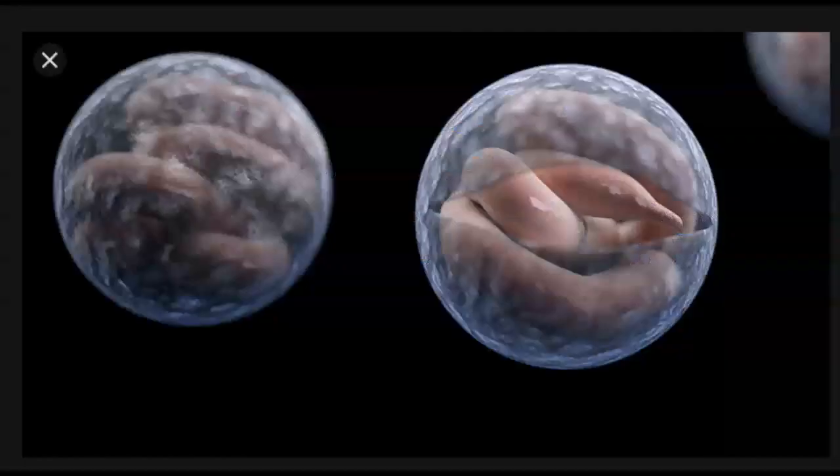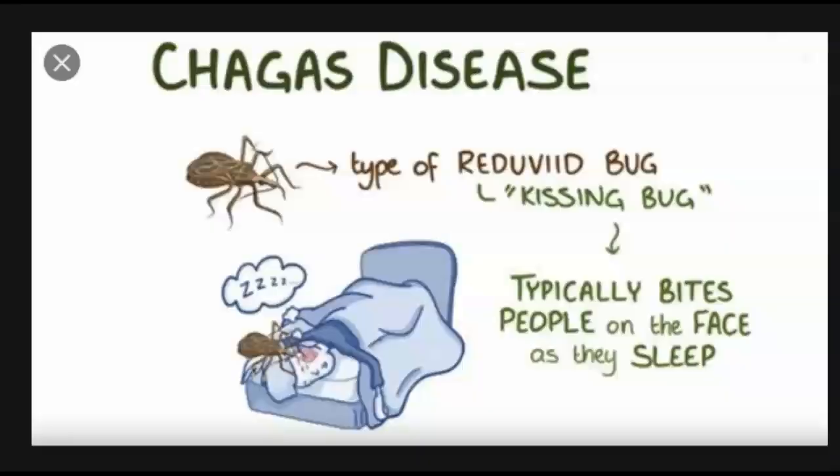Cryptosporidium is manifested by diarrhea. This infection occurs most commonly in immunosuppressed patients, particularly those with HIV. It can also occur in children and older adults from contaminated swimming pools.